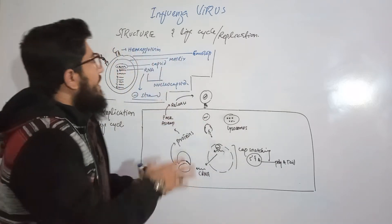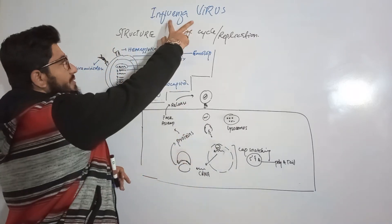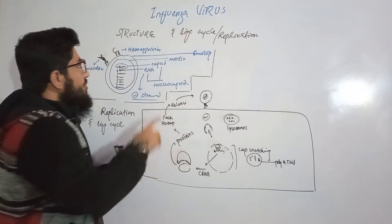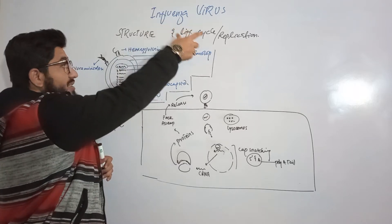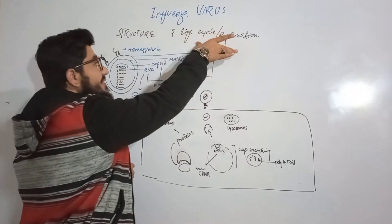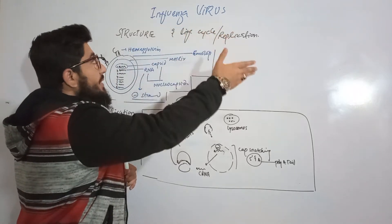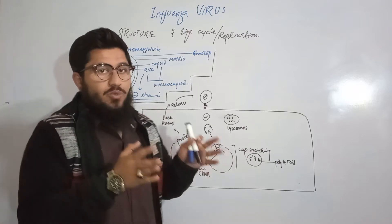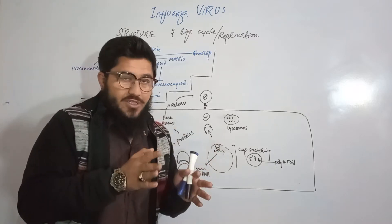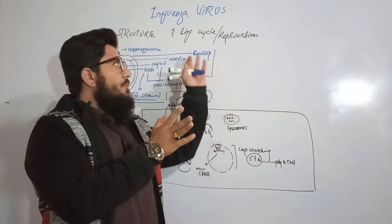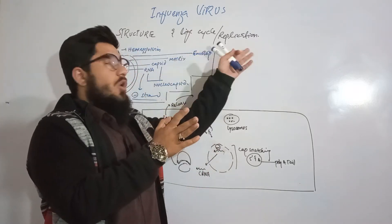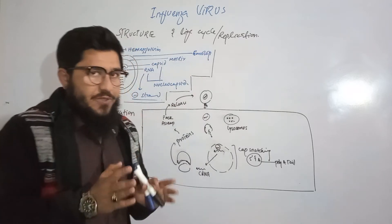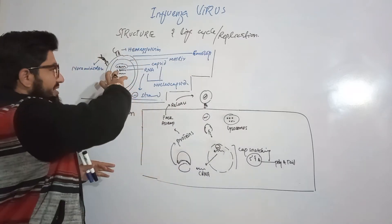In this tutorial we will discuss the influenza virus. This lecture covers both the structure of the influenza virus and its life cycle or replication — we will discuss both things in a single lecture. Coming to the first point: the structure, which will be explained from the inside to the outside, from the inner core to the external envelope.